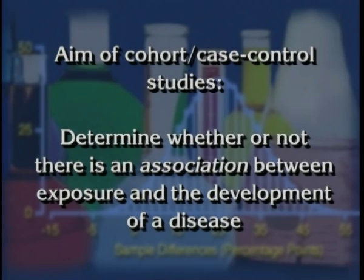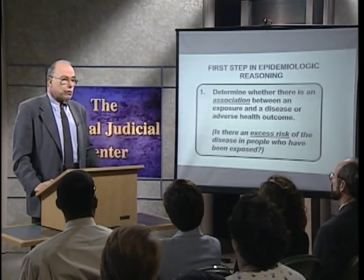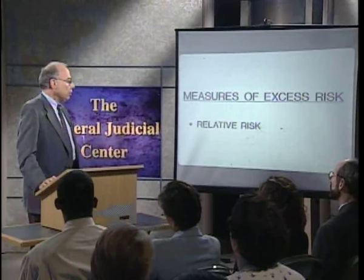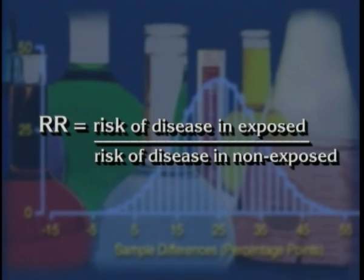We are carrying out these studies to determine whether there's an association between an exposure and a disease or adverse health outcome — or, is there an excess risk of disease in people who have been exposed? The first measure of excess risk is the relative risk, perhaps the most commonly used measure of increased risk. The relative risk is the ratio of the risk of disease in exposed people divided by the risk of disease in the non-exposed people.